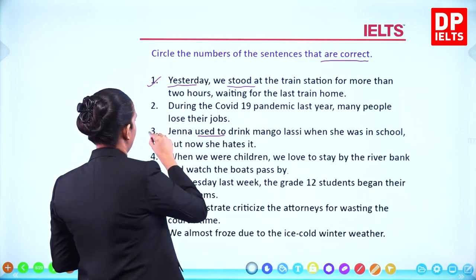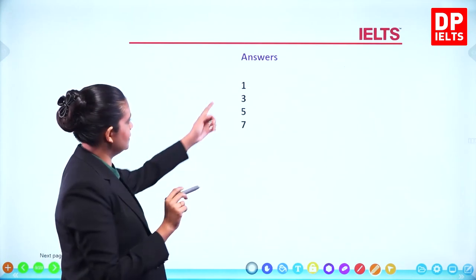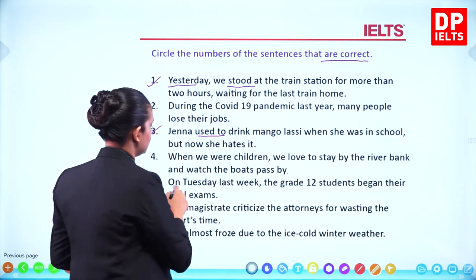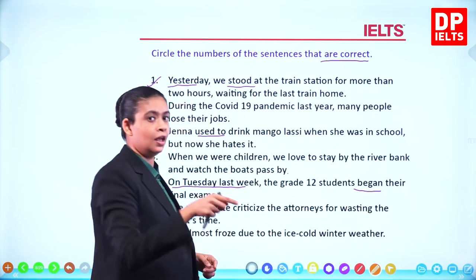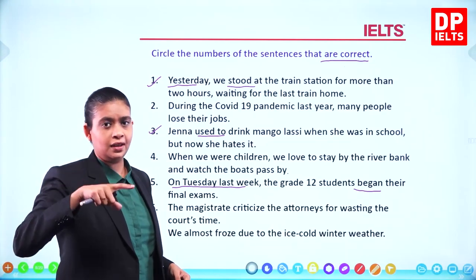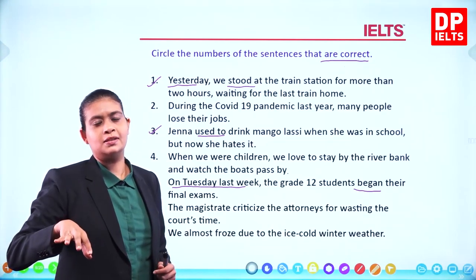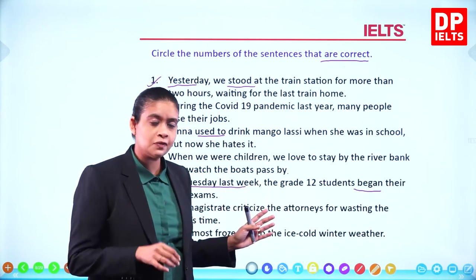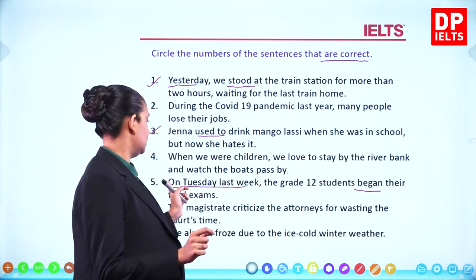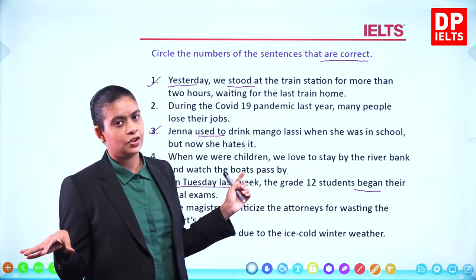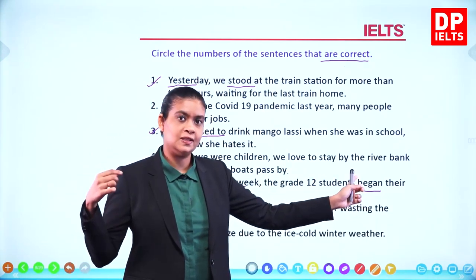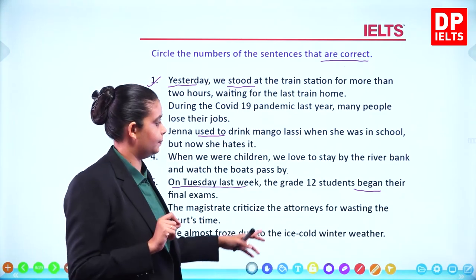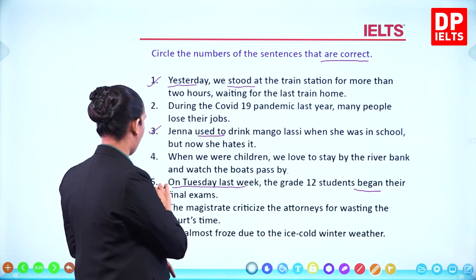Sentence five: 'On Tuesday last week the grade 12 students began their final exams.' Begin — began — begun. Begin is the present tense, began is the past, begun is the past participle. Because it was at a specific time in the past — last week, specifically Tuesday — the verb must be in the simple past tense: began. So sentence five is correct.